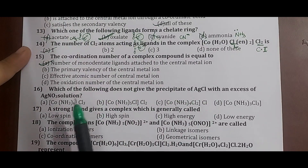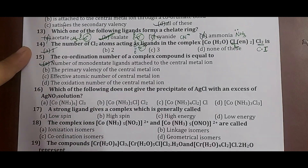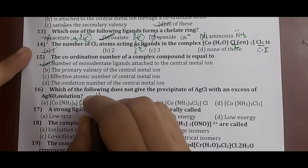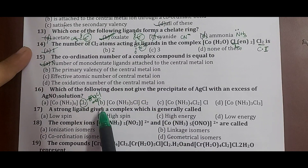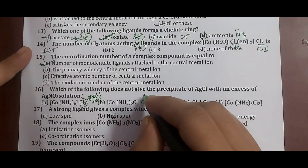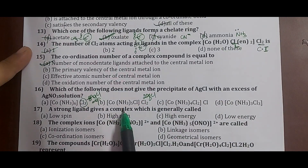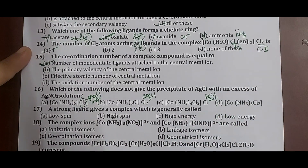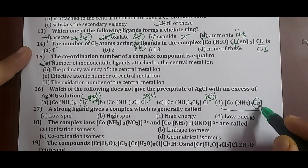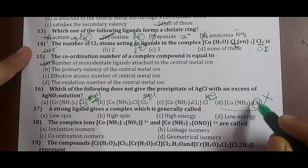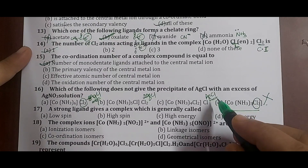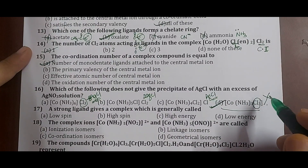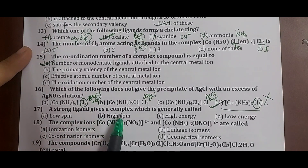Question 16: which does not give a precipitate of AgCl with excess AgNO3? Option A has 3 Cl outside — 3 moles AgCl precipitated. Option B has 2 Cl outside — 2 moles precipitated. Option C has 1 Cl outside — 1 mole precipitated. Option D has Cl within the coordination sphere — non-ionizable, so no AgCl precipitate. Correct answer: option D.